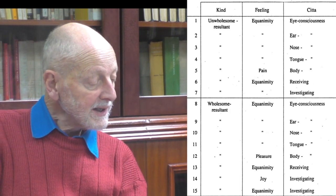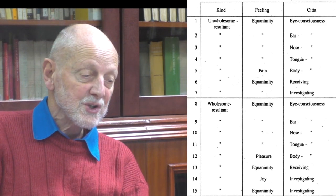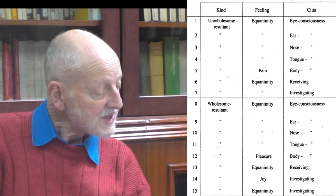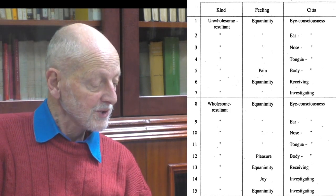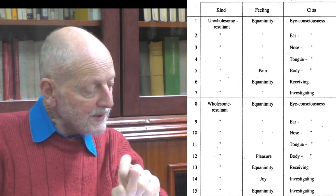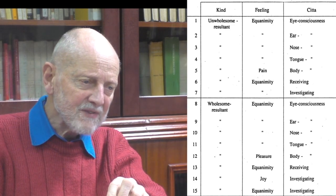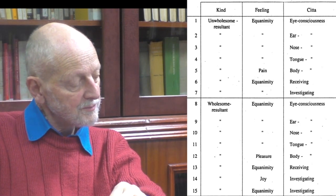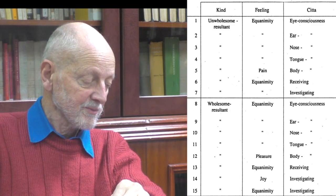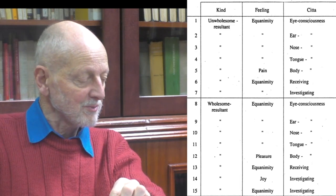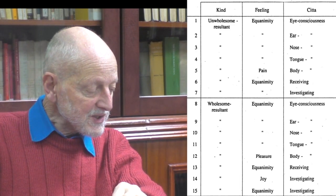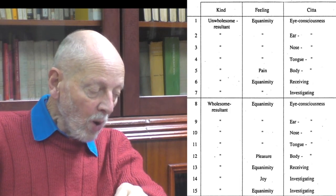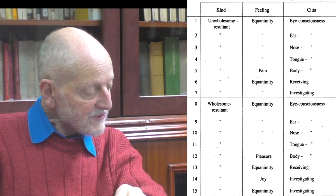As far as numbers 8 to 12 are concerned, they are paralleled by the first part of numbers 1 to 5. Then again we have a receiving consciousness, which is the same as the other receiving consciousness, number 6, except this is a wholesome resultant. But whereas in the case of number 7 the investigating consciousness, the santirana, was only of one kind, now there are two possibilities. If it is a resultant from a wholesome action, the feeling can be either one of joy — that's number 14 — or equanimity, that's number 15.